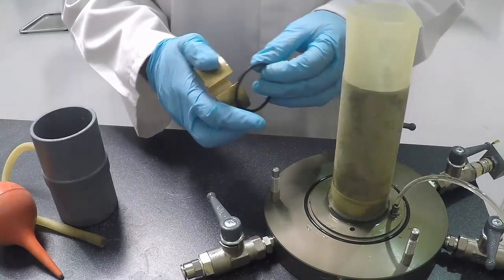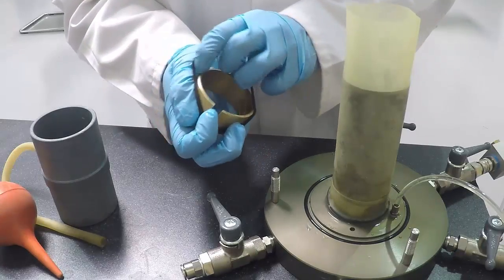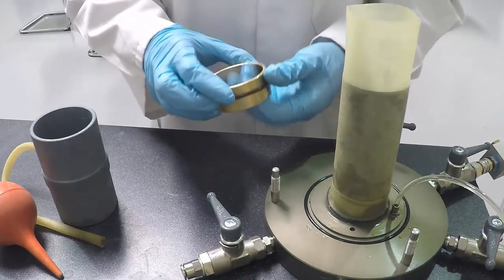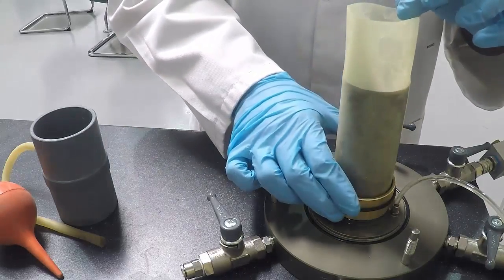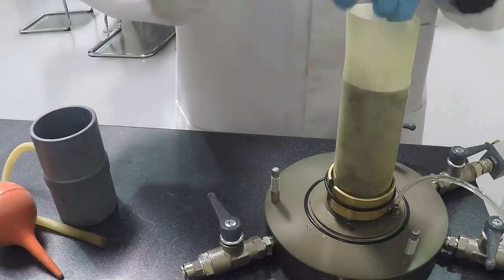Another O-ring is required to secure the top of the membrane. Stretch another O-ring over the stretcher and place it on the specimen. You will need to do this before you put on the top cap.